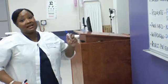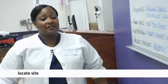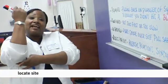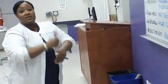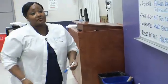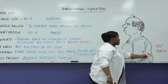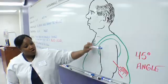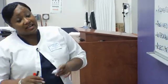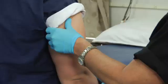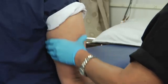First, locate the site. The site is usually the fatty part of the back of the arm, but you can also give it on the side of the arm. As illustrated, you can go on the back of the arm at a 45-degree angle or the side of the arm. There are several different sites for a subcutaneous injection: the abdomen, the back area — but the most common site is the fatty adipose part of the back of the arm.